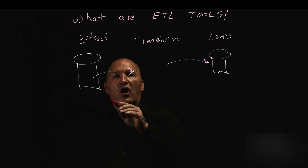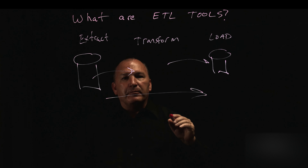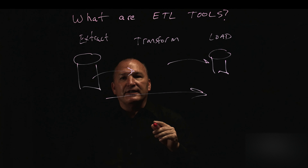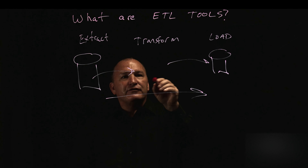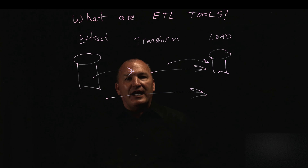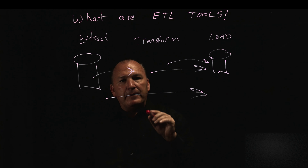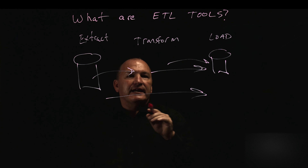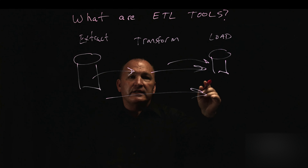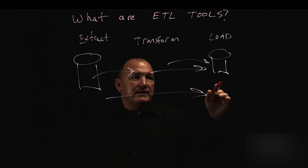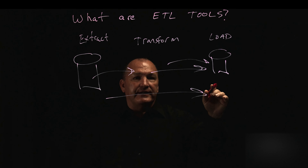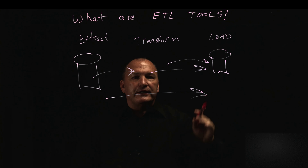The third approach is really the most interesting — automating the end-to-end process. The automation generates the code automatically for you, and the transformation may be pushed down directly into the target system. This is a modern way people are thinking about ETL, particularly with cloud data warehouses, leveraging their power, scalability, elasticity, and cost advantage to move data in real time and perform transformation directly in the target system.